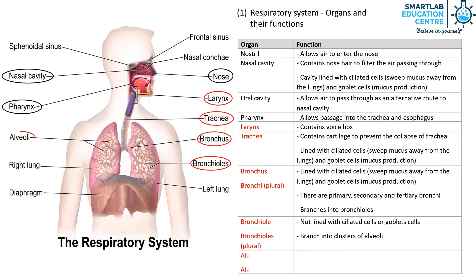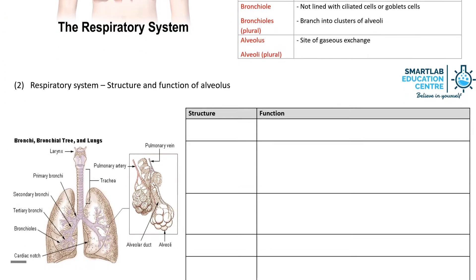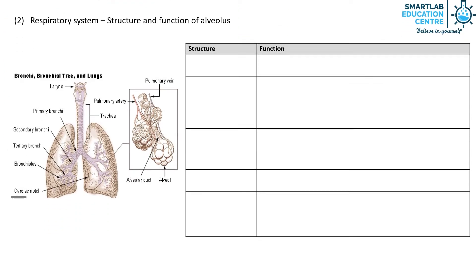The bronchioles branch out into clusters of alveoli. The alveolus, or alveoli, is the site of gaseous exchange. Before we take a closer look at the structure of the alveolus, let's recap on some of the structures of the respiratory system. From the diagram, you can see how the trachea, bronchi, bronchioles, and alveolus are linked together.